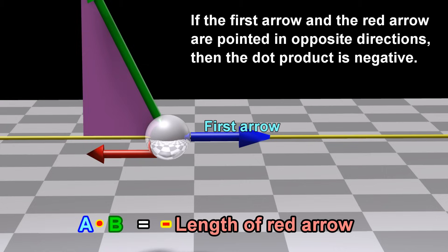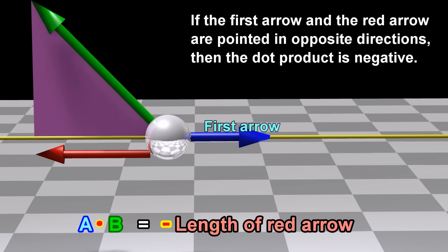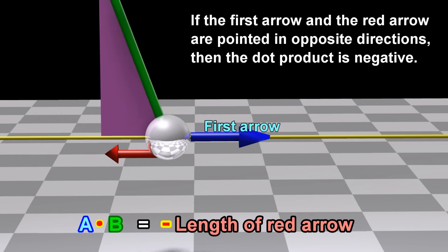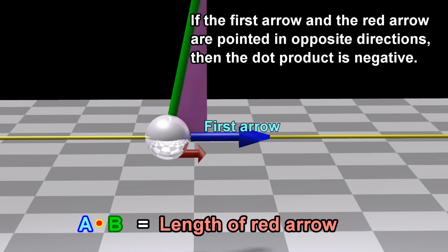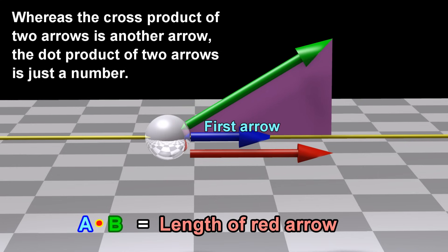If the first arrow and the red arrow are pointed in opposite directions, then the dot product is negative. Whereas the cross product of two arrows is another arrow, the dot product of two arrows is just a number.